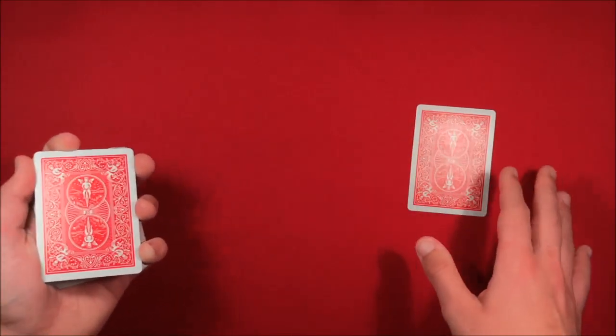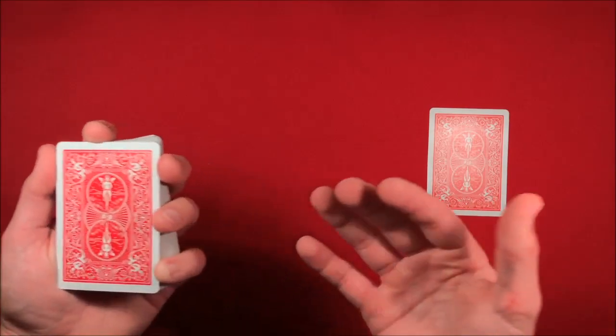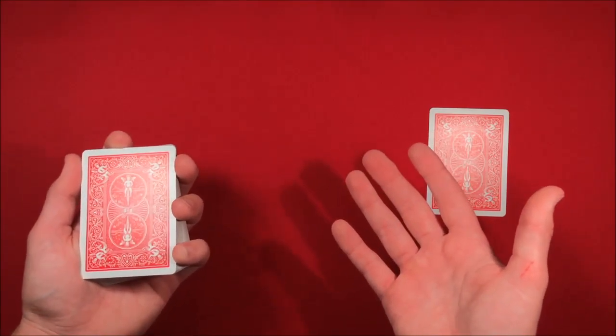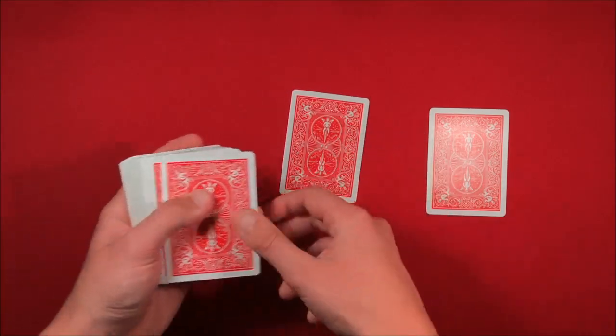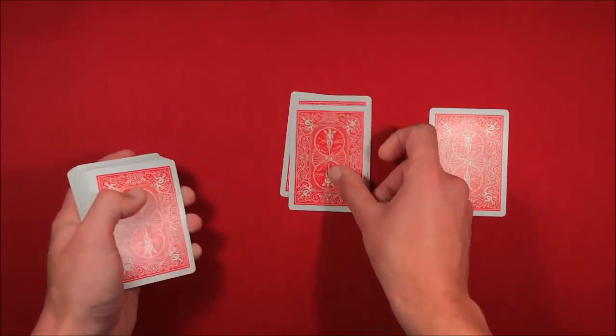So you can tell the spectator, alright so I'm going to go ahead, I'm going to use the deck to help you find out what your card is. So let's see what color it is. So you go ahead and you spell out color, C-O-L-O-R, and then the next card down is going to tell us the color. And you tell them it is going to be a red card.